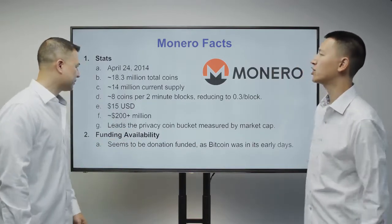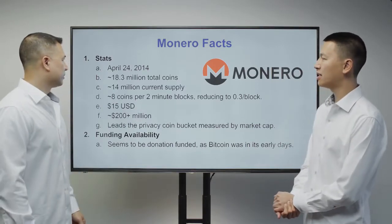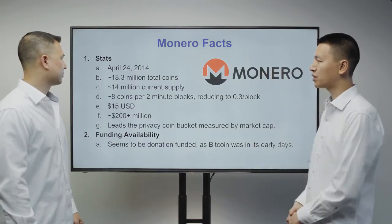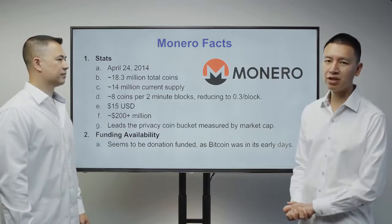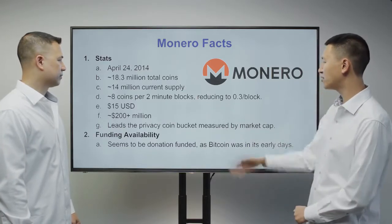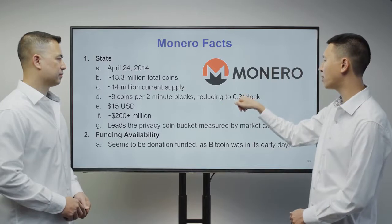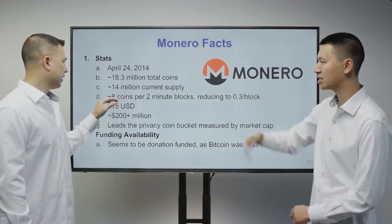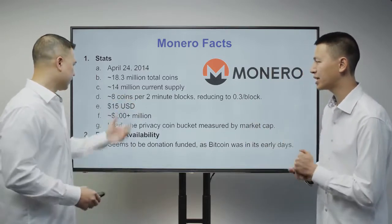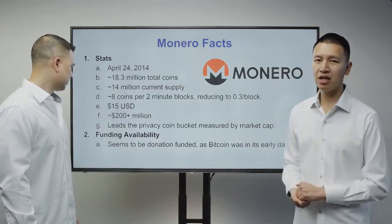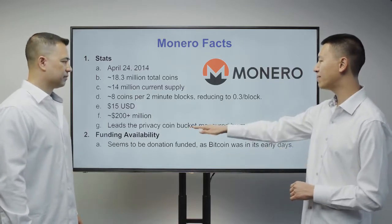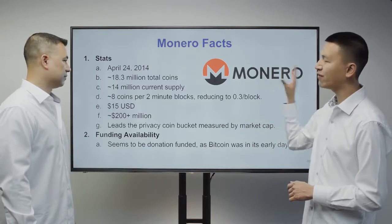Some Monero facts: the coin launched in April 2014. There are expected to be 18 million coins total, with about 14 million currently circulating. Eight Monero coins are minted every two minutes, reducing over time to eventually just 0.3 Monero every two minutes. It's currently at about $15 with over $200 million market cap, and it's the leading privacy coin focused solely on privacy as measured by market cap.